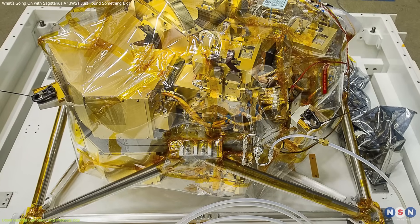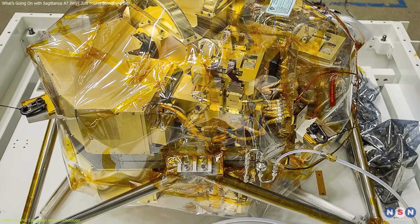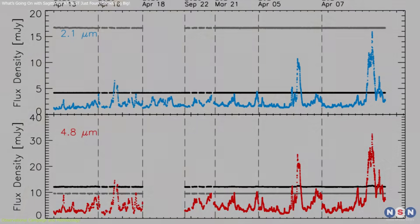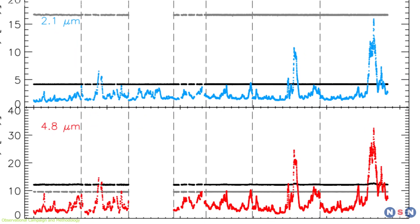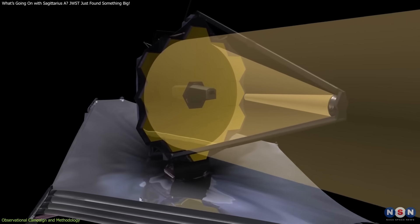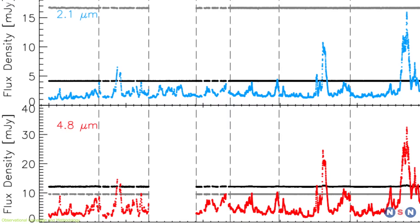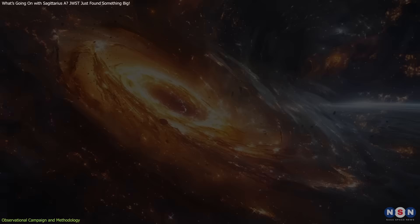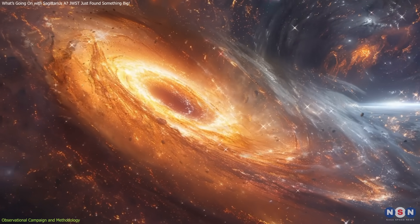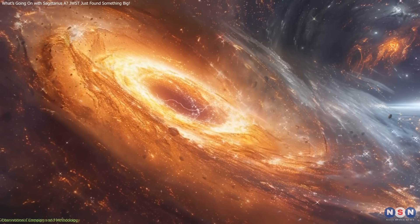The NIRCAM's dual wavelength capability was pivotal in this endeavor. By simultaneously capturing data at 2.1 and 4.8 microns, the instrument enabled researchers to discern subtle variations in the flares' characteristics across different wavelengths. This dual-wavelength approach not only enhanced the detection sensitivity, but also provided critical insights into the physical processes driving the flares.